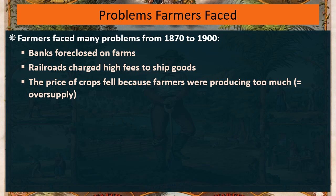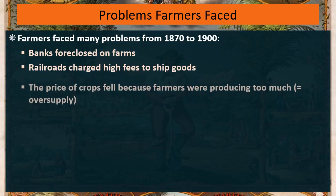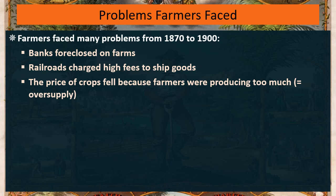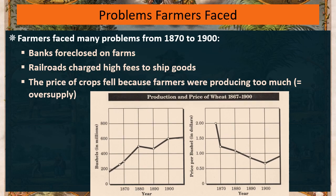Look at all these money problems that farmers faced: not being able to pay their bank loans, not being able to pay for shipping goods, and not making money because they're producing too much wheat, corn, and other farm products. These are all money-related problems. As farmers produce more and prices go down, farmers think: what can we do about money and our access to it?